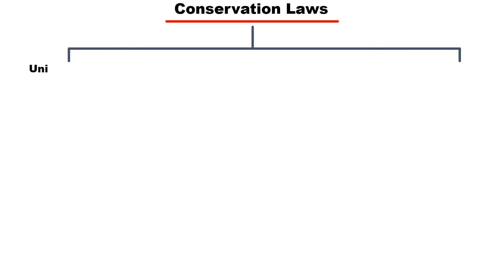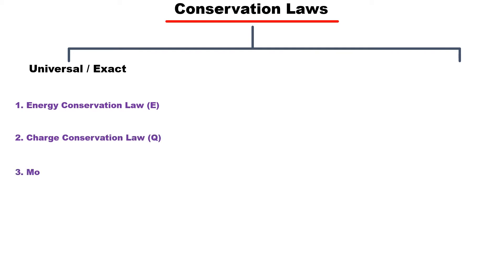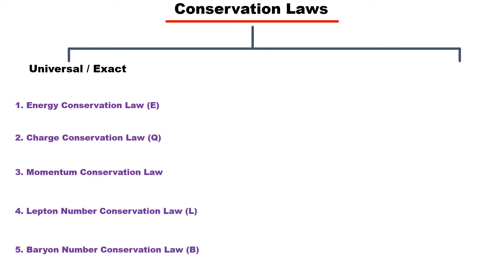These conservation laws decide whether the reaction will be allowed or not. All conservation laws are divided into two parts. Universal or exact conservation laws are necessary for any reaction to be allowed. If any one of them is violated, the reaction cannot be allowed. There are also some other conservation laws that may or may not be conserved in a reaction, but the reaction can still be allowed — these are called approximate conservation laws.